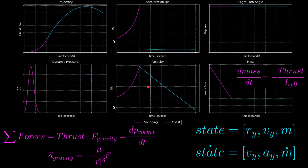In this simulation, the rocket is thrusting with a constant thrust for the first 200 seconds, which is shown in the purple sections of the plots, and then coasting with zero thrust for the next 500 seconds.